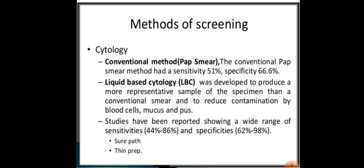Studies show liquid-based cytology has a sensitivity range of 44% to 86% and specificity of 62% to 98%. There are two methods: SurePath and ThinPrep — ThinPrep is most commonly used. The smear should contain cells from the squamocolumnar junction, transformation zone, and endocervix.